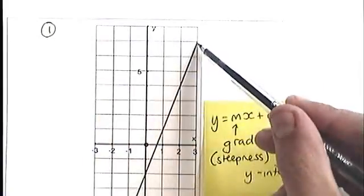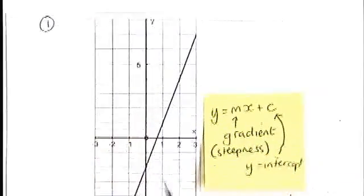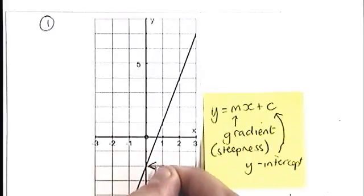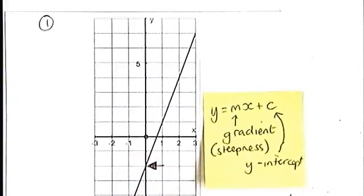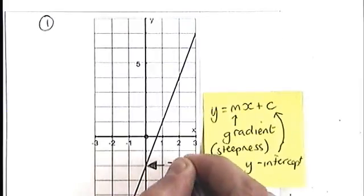So where does the diagonal line cross the y-axis? And if you can point to that with an arrow, then you've found the y-intercept. In this case, it is minus 2.